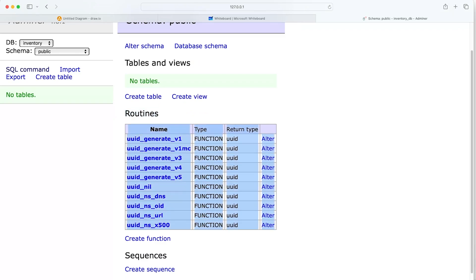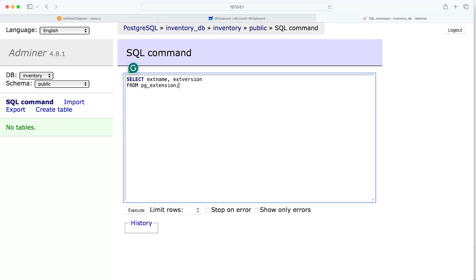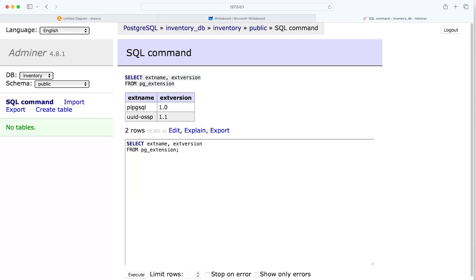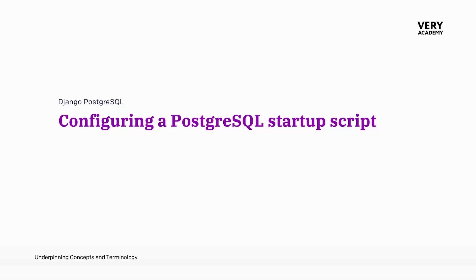To further confirm, we can use the SQL command option in Adminer: `SELECT extname, extversion FROM pg_extension;` — this shows all installed extensions, and we can see `uuid-ossp` listed there. I apologize if this was hard to follow with the mistakes, but I was trying to build that experience to embed important lessons about reading logs, understanding volumes, and how they relate to the Postgres initialization process. We now have everything ready to connect a Django project to our Postgres database.